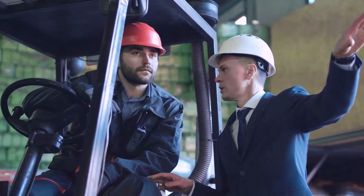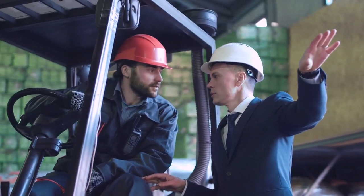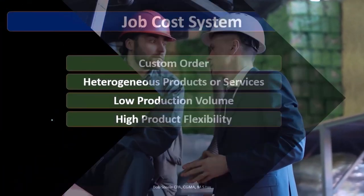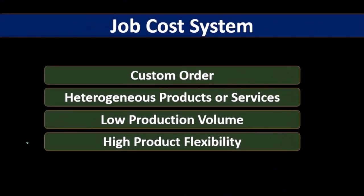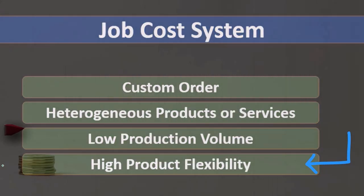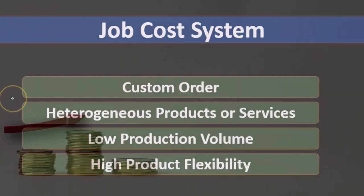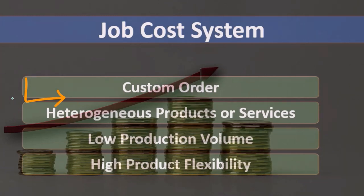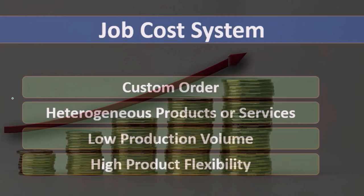In a job cost system, there will be flexibility based on the fact that products are going to be custom in some manner. The job cost system will typically have higher dollar values for the products, and that leads through the customization — if we're going to customize it, it's going to take more time and cost more, as opposed to if everything was just the same.